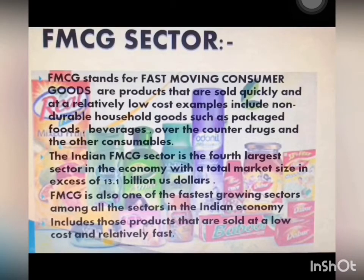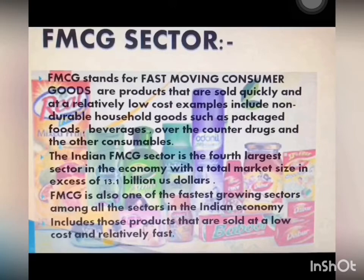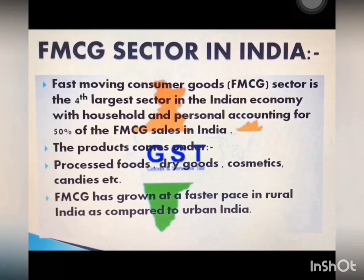FMCG stands for Fast Moving Consumer Goods. These are products that are sold quickly and at a relatively low cost. Examples include non-durable household goods such as packaged foods, beverages, and over-the-counter drugs. The Indian FMCG sector is the fourth largest sector in the economy with a total market size in excess of 13.1 billion US dollars, and is also one of the fastest growing sectors. Household and personal care accounts for 50% of FMCG sales in India. Products under FMCG include processed foods, dry goods, cosmetics, and candies. FMCG has grown at a faster pace in rural India compared to urban India.